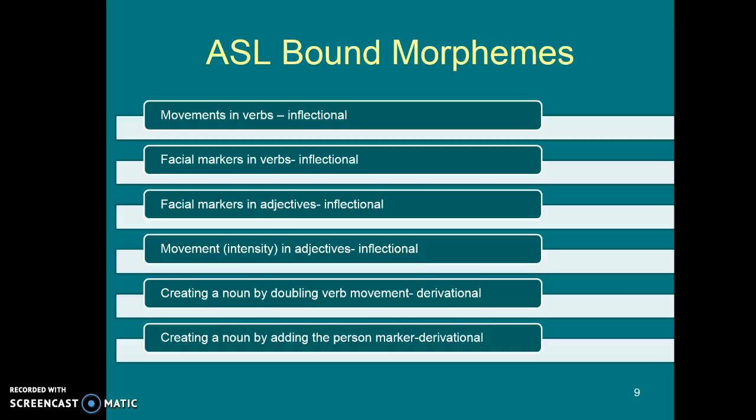Now, those were all inflectional morphemes. But in ASL we also have derivational morphemes — morphemes that change the part of speech. For instance, if you take the verb 'sit' and make it with a smaller double movement, you've created the noun 'chair.' If you take the verb 'fly,' which is a big movement, and do it in a quick, small movement, you change 'fly' to 'airplane.' By changing the movement, you've added a bound morpheme to the sign 'fly' and changed the part of speech — that's why it's a derivational morpheme. You've made a verb, fly, into a noun, airplane.